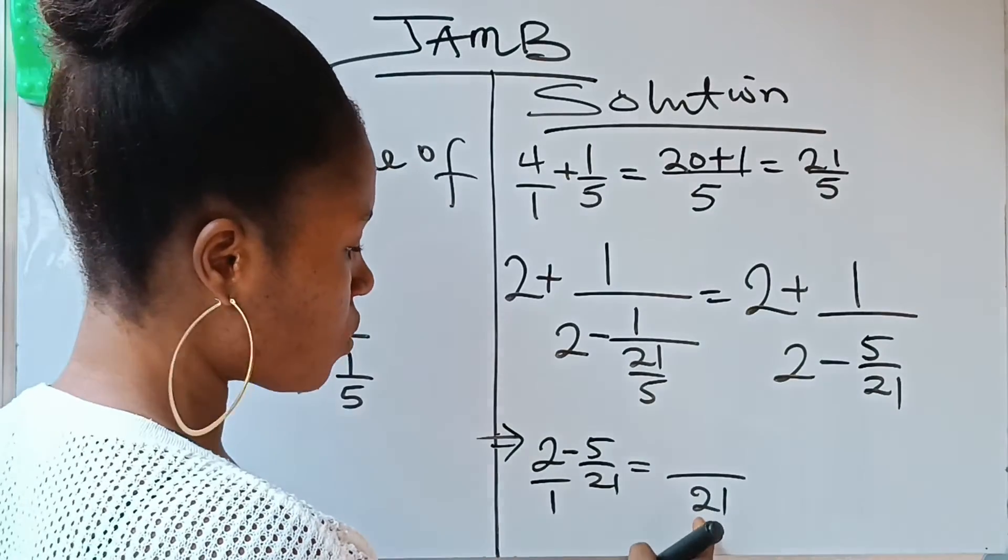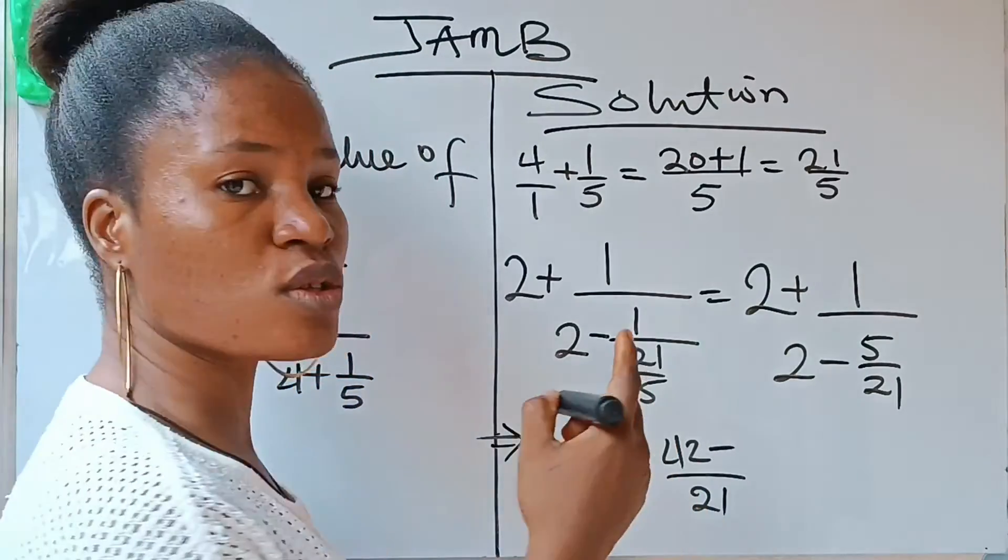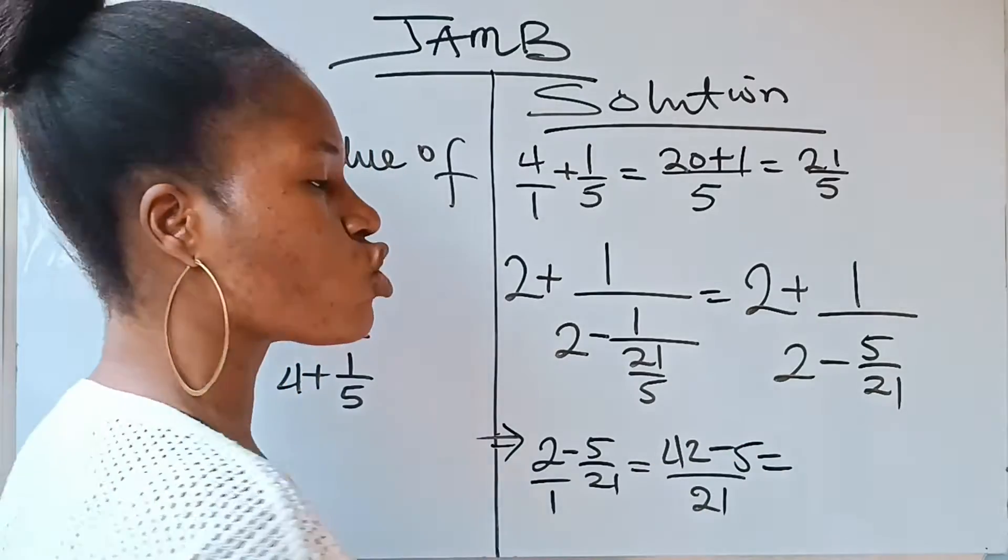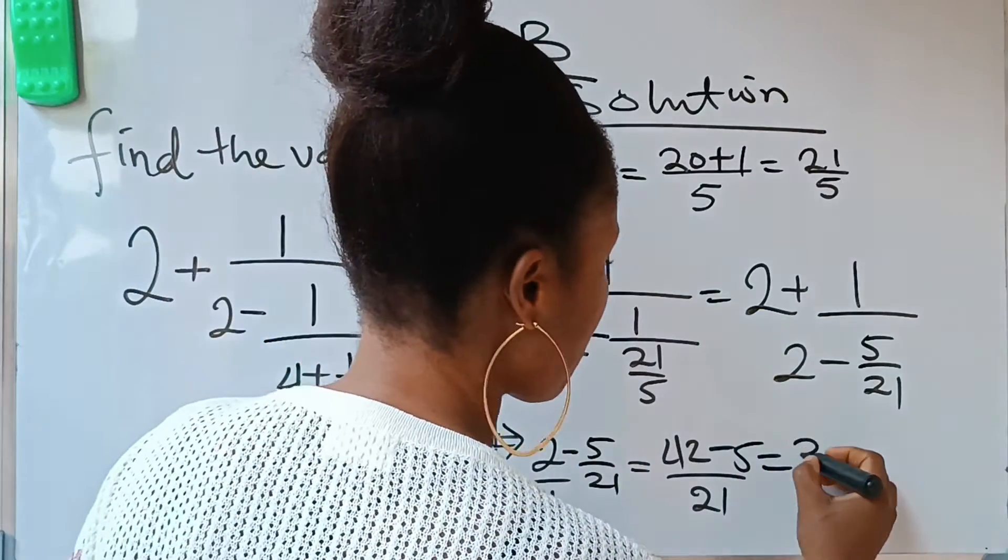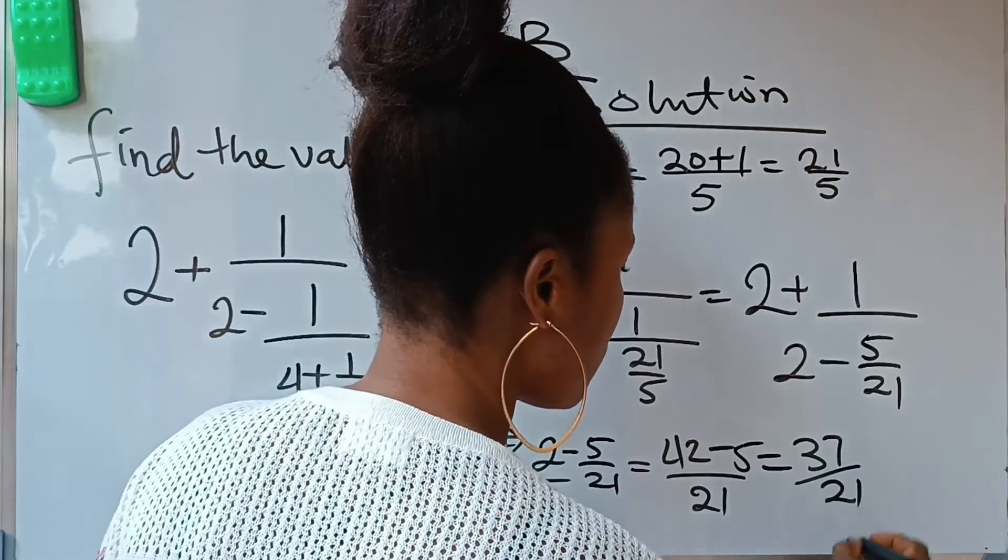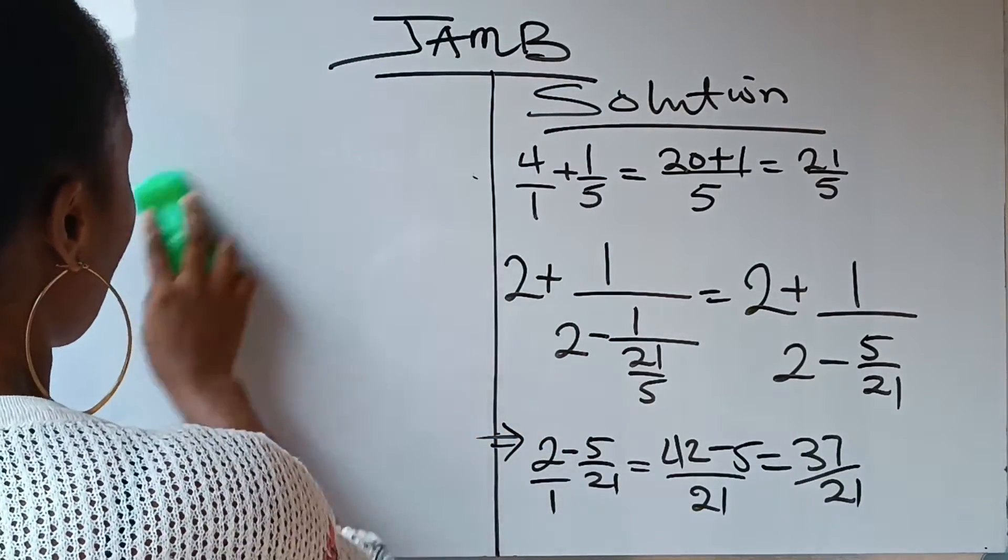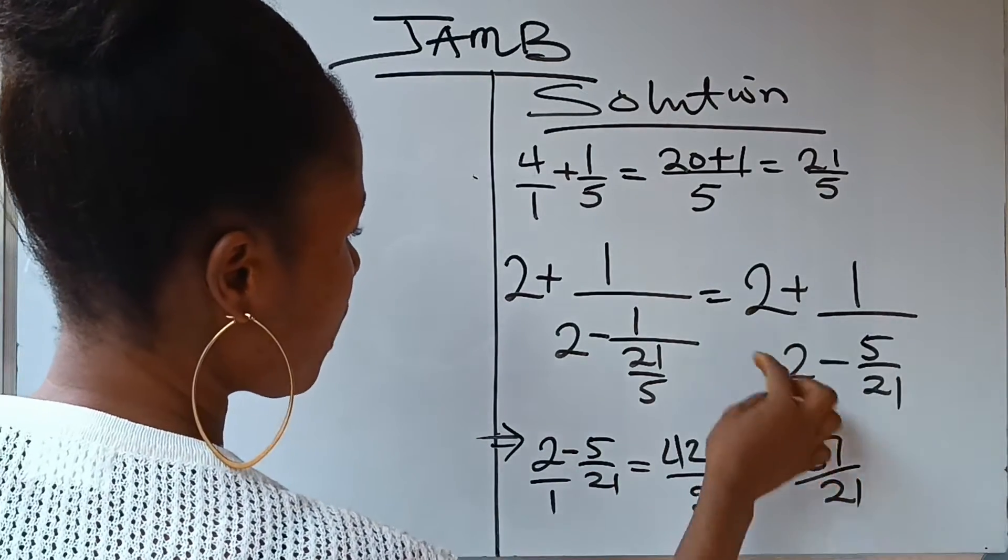Now 1 divided by 21, you are going to have 21. 21 times 2 is going to give you 42 minus, 21 divided by 21 will give you 1, 1 times 5 will give you 5. So 42 minus 5 is going to give us 37, right?